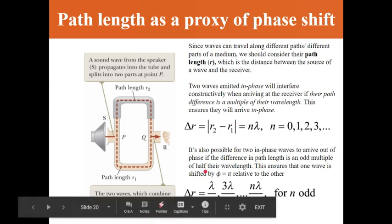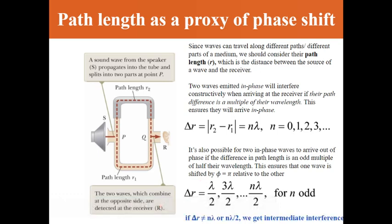Any number of full wavelengths as your path difference will ensure that waves emitted in phase arrive in phase. But if one wave travels a path whose difference from the other wave's path is an odd multiple of half their wavelength, they will arrive out of phase at the listener. If the path difference is neither a full wavelength nor a half wavelength, you get some intermediate interference — not full superposition, but not full cancellation either.